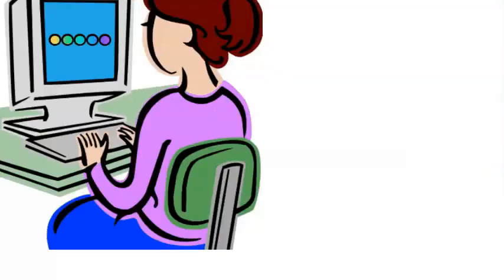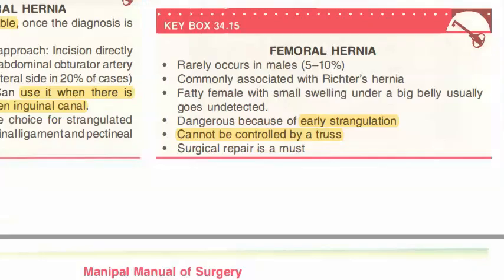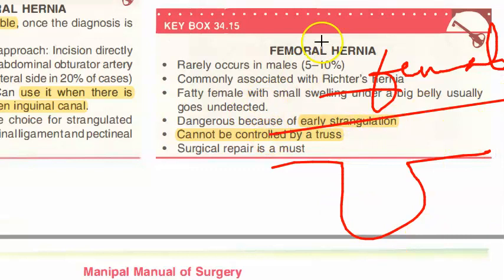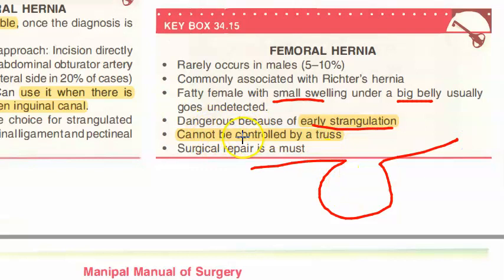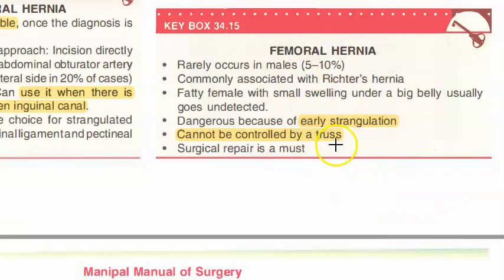Recap: femoral hernia occurs mainly in females, is commonly associated with Richter's hernia, and can go undetected in obese women as a small swelling under a large abdomen. It is dangerous due to strangulation risk because the canal is narrow and rigid. It expands only after exiting the saphenous opening. It cannot be controlled by a truss — surgical repair is a must.